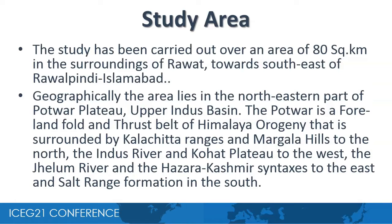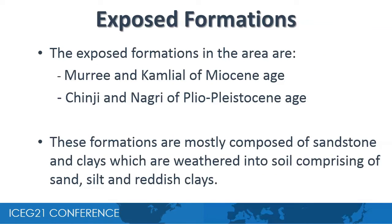The study has been carried out over an area of 80 square kilometers in the surroundings of Rawat towards the southeast of Rawalpindi-Islamabad. Geographically, the area lies in the northeastern part of Potwar Plateau, upper Indus Basin. The Potwar is a fold-and-thrust belt of Himalayan origin surrounded by Kalachita ranges and Margalla hills in the north, the Indus River and Kuhar Plateau to the west, the Jhelum River and the Hazara-Kashmir Syntaxis to the east, and the Salt Range formation in the south. The exposed formations in the area are Murree and Kamlial of Miocene Age, Chinji and Nagri of Plio-Pleistocene Age. These formations are mostly composed of sandstone and clays which are weathered into soil comprising of sand, silt, and reddish clays.